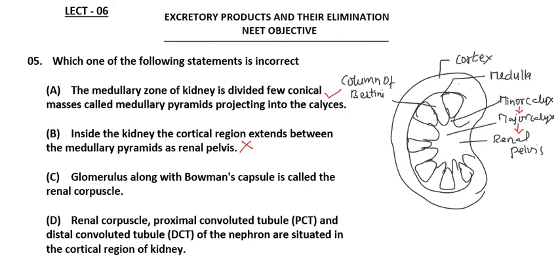Statement three: glomerulus along with Bowman's capsule is called the renal corpuscle — correct. Statement four: the renal corpuscle, PCT, and DCT of the nephron are situated in the cortical region of the kidney — also correct. The loop of Henle dips into the medullary pyramids. So option B is the incorrect statement and is the answer.